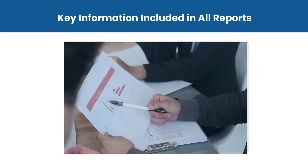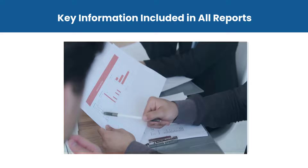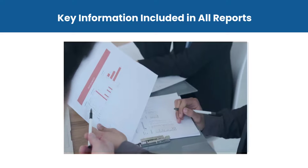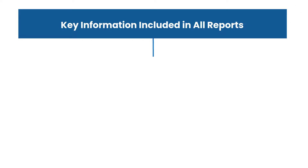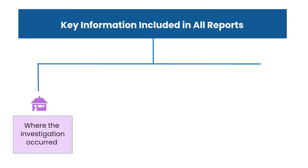Reports covering investigative processes can vary between different providers. However, there is key information that should be included in all reports. The first key reportable result is where the investigation took place. This includes the address of the building, date of construction, unit numbers, and rooms and areas included.